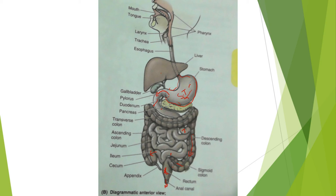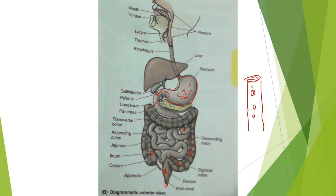The arterial supply of the digestive system is from the abdominal aorta. The abdominal aorta gives rise to three major branches which arise from its anterior part: one branch above, one in the middle, and one lower down before it bifurcates into the common iliac vessels.